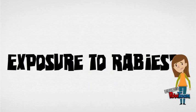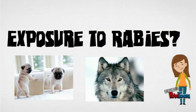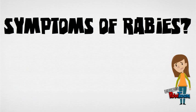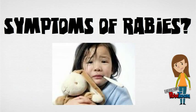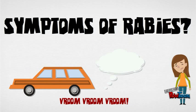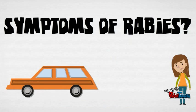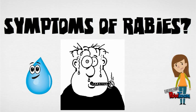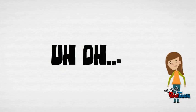People usually get rabies from the bite or scratch of a rabid animal. First, symptoms of rabies are very similar to that of the flu. However, symptoms progress very rapidly to dysfunction, confusion, hallucinations, fear of water, and problems swallowing. Infected patients slowly become paralyzed and will eventually slip into a coma and die.